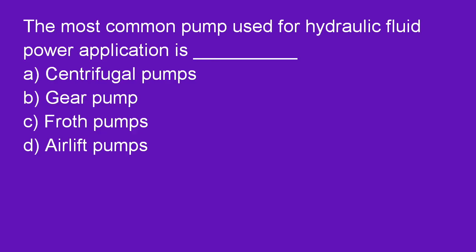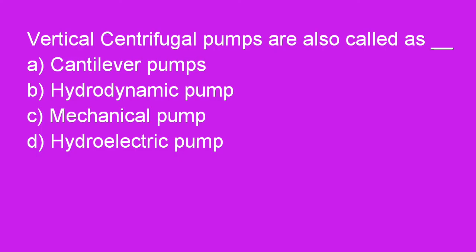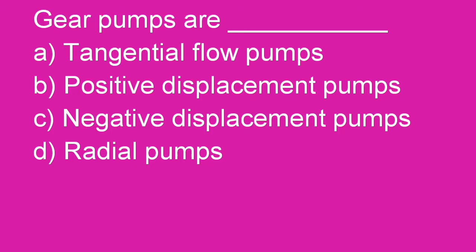Next question: The most common pump used for hydraulic fluid power application is a gear pump. Option B is right. Next question: Gear pumps are mainly used in chemical installations because they pump highly viscous fluids. Option A is right. Next question: Vertical centrifugal pumps are also called cantilever pumps. Option A is right. Next question: Gear pumps are positive displacement pumps. Answer B is right.